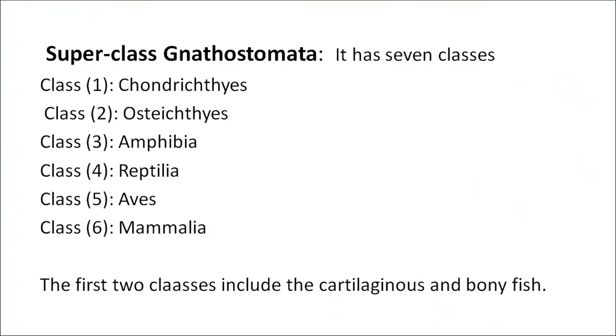Superclass Gnathostomata is further divided into six classes: first is Chondrichthyes, second is Osteichthyes, third is Amphibia, fourth is Reptilia, fifth is Aves, and sixth is Mammalia. The first two classes — Chondrichthyes and Osteichthyes — include the fish, which are cartilaginous and bony fish respectively. Fish are aquatic animals, gill-breathing, and move with the help of fins.